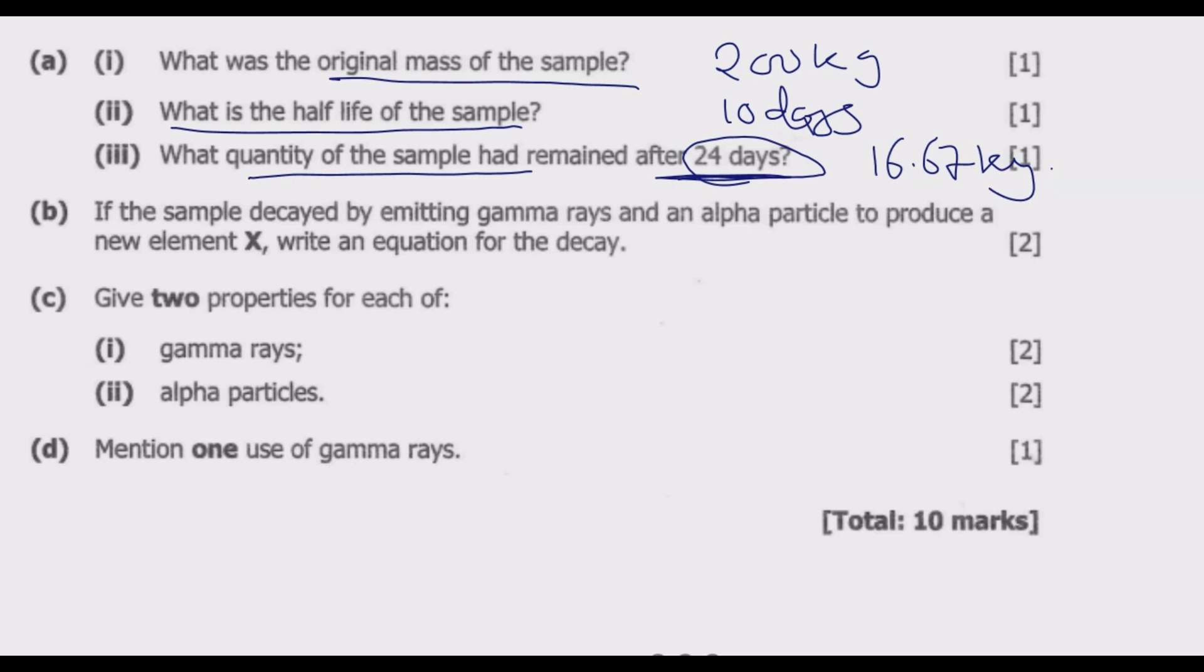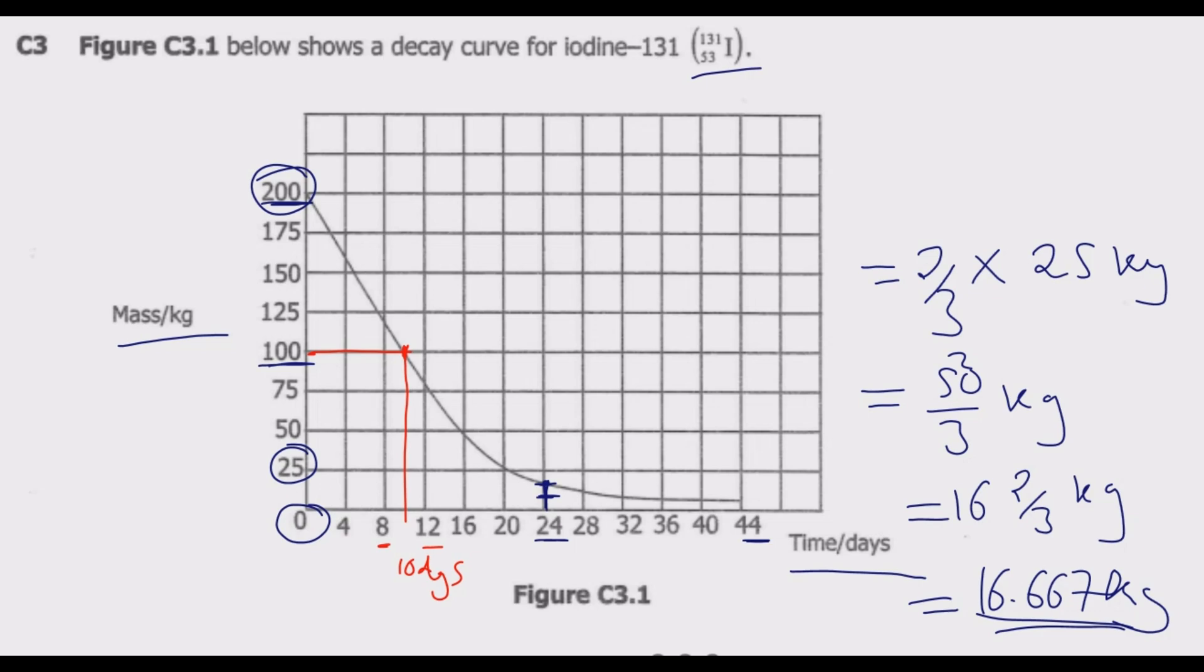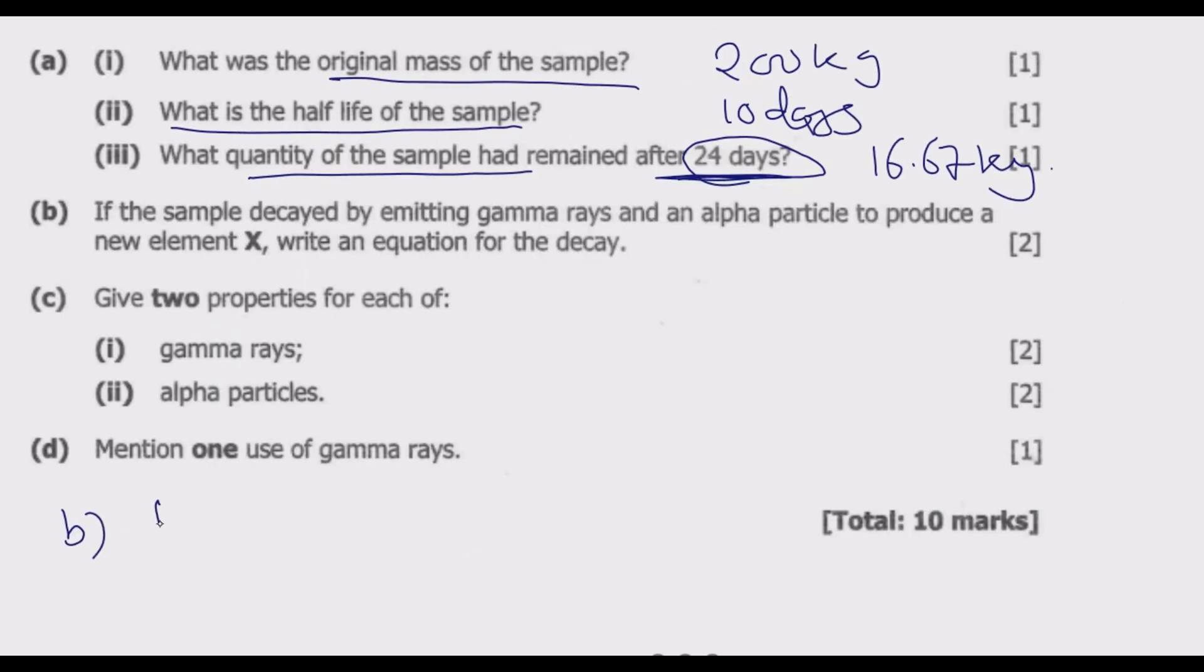Let us look at question B. If the sample decayed by emitting gamma rays and an alpha particle to produce new element X, write an equation for the decay. This is iodine-131: 131 iodine 53. This decays by emitting gamma which is 0,0 plus helium which is 4,2.